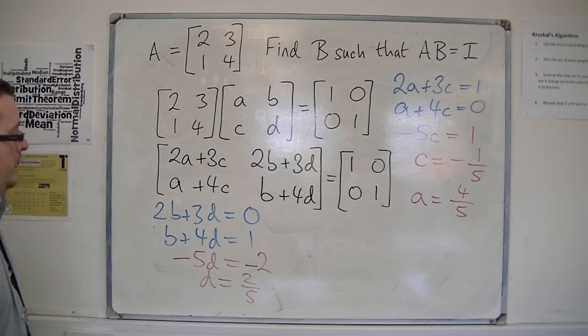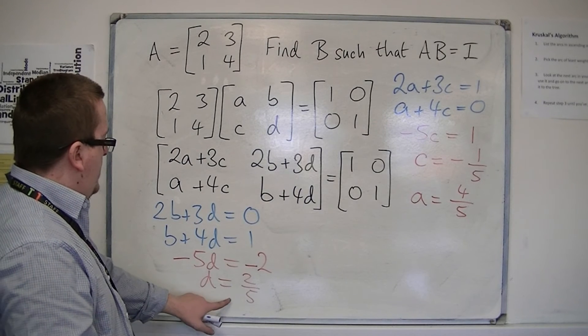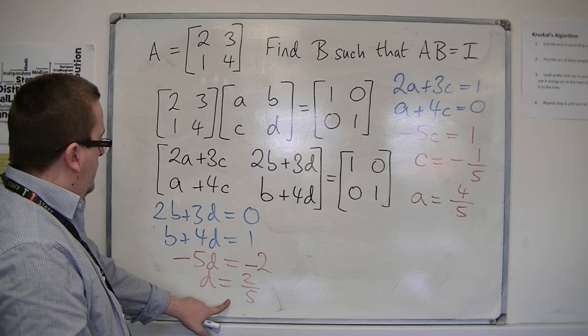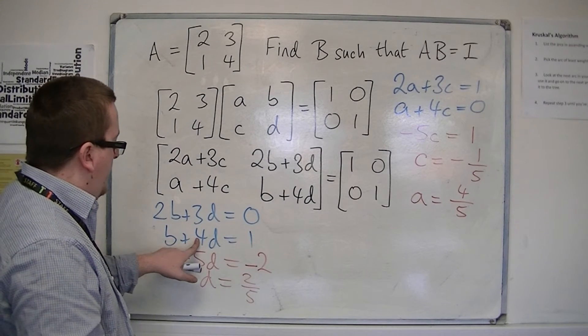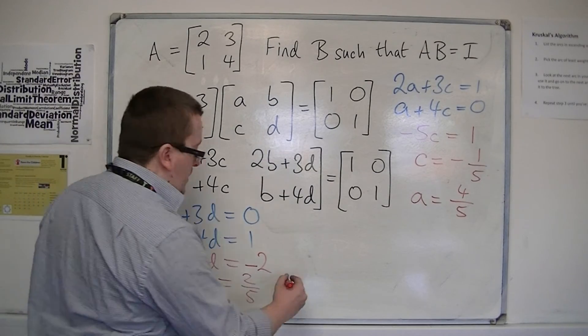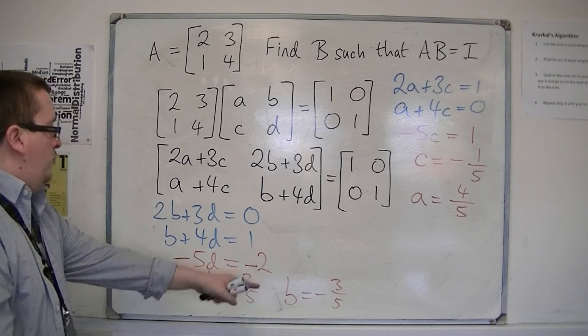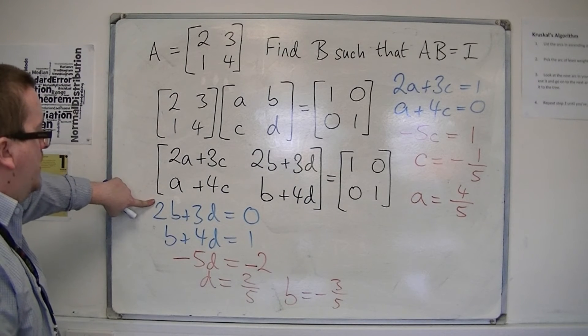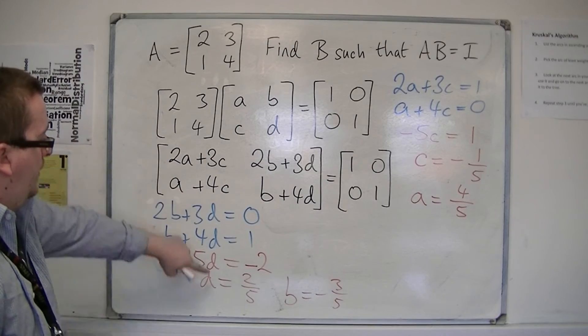So if I substitute 2/5 into, let's say this one, then I get 8/5 there, that's 5/5, so b would have to be minus 3/5. I think that's all right. I'll check that into the top equation: minus 3/5, minus 6/5, plus 6/5, yes.